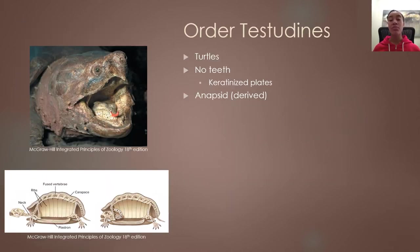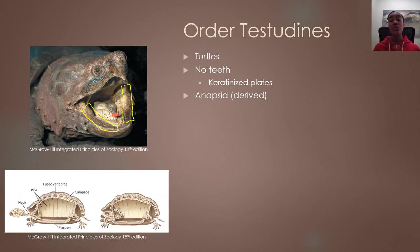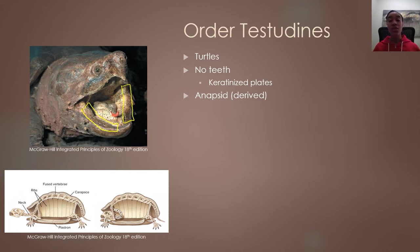Looking more closely at non-avian reptile groups, we begin with turtles, which belong to order Testudines. All turtles lack teeth and instead have hardened keratinized plates in their mouths for grabbing and gripping prey, which you can see well in a picture of an alligator snapping turtle. These plates in combination with strong jaws can be exceptionally lethal to any prey that comes too close. All turtles are anapsids, which is a derived characteristic — they share a common ancestor that was a diapsid, but throughout turtle evolution they lost those two additional openings in the skull.